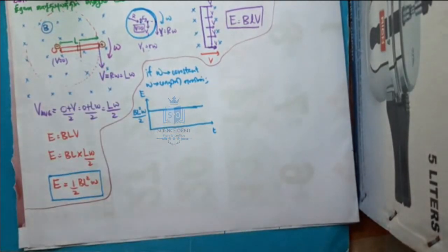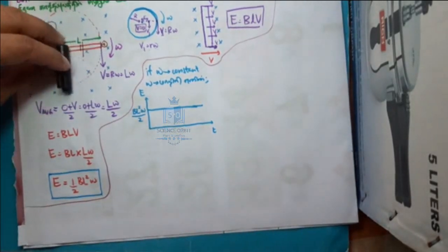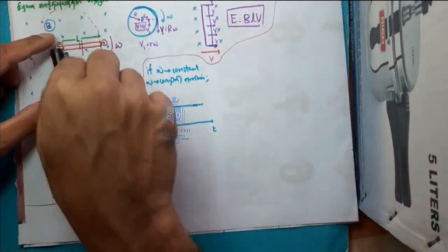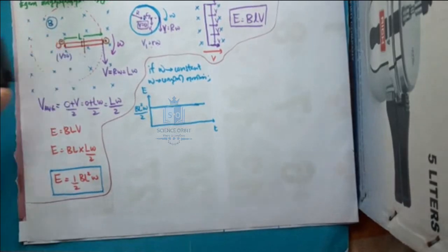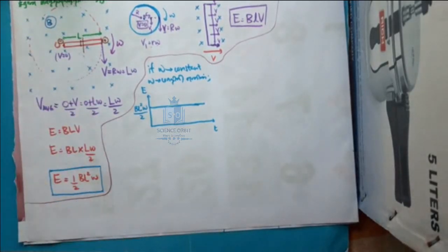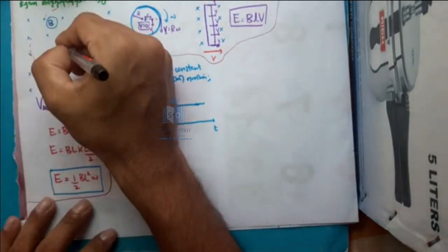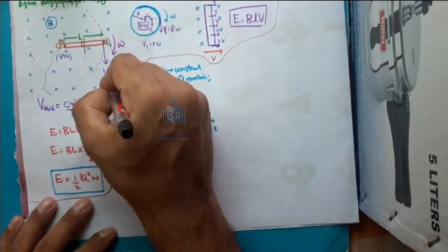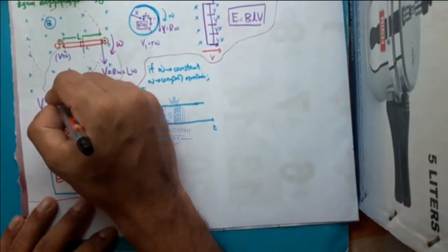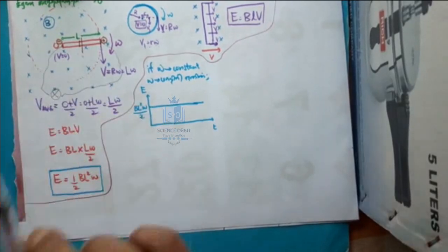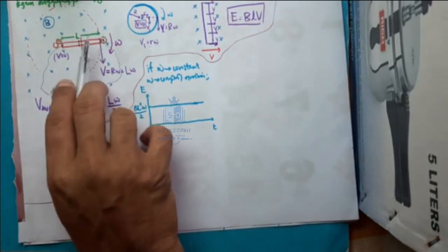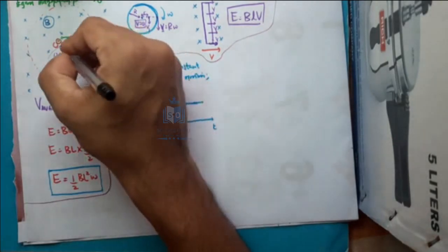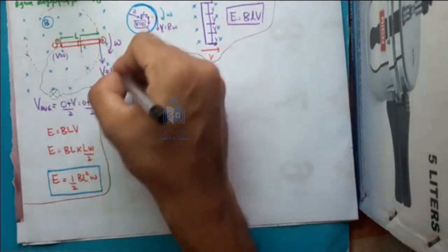When the rod comes to a new position, the polarity does not change — this end remains plus and the other end remains minus. When you connect this rod to an outer circuit, remember the rod has to be rotating, not at rest. Then in the outer circuit, current will travel in the corresponding direction.